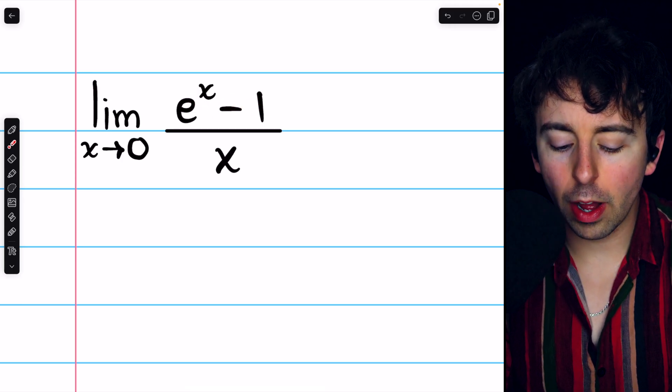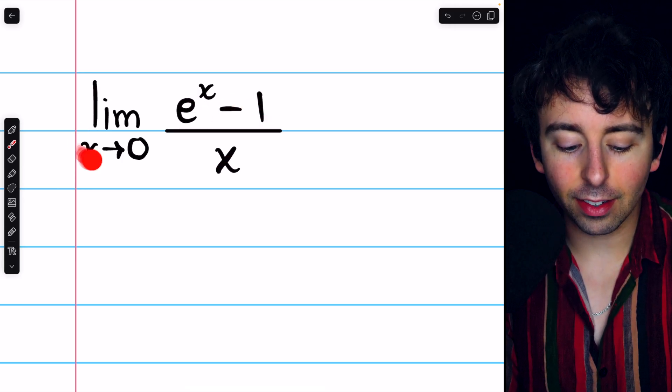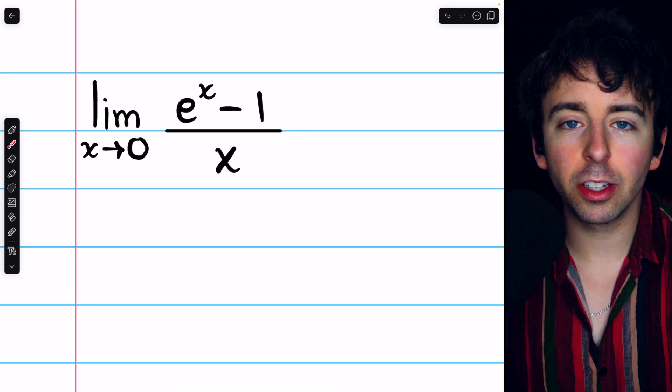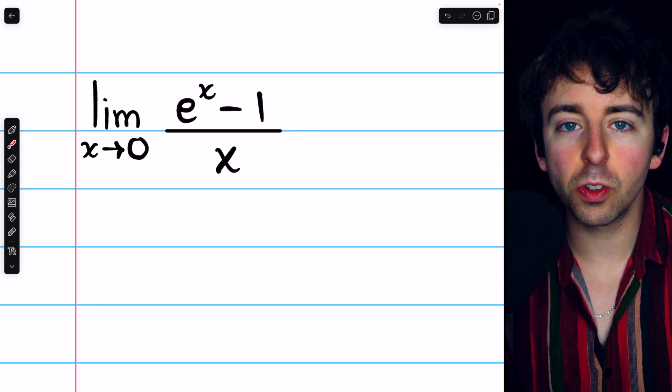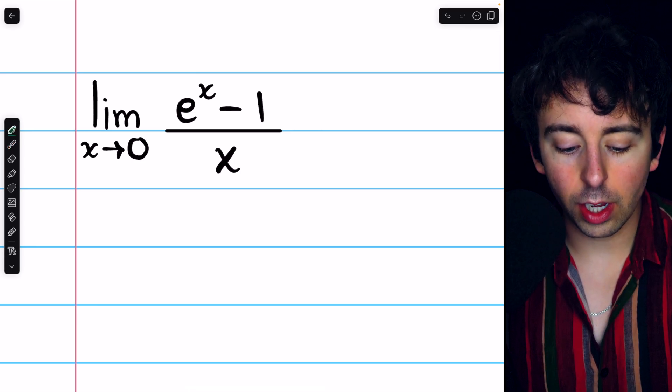The limit of e to the x minus 1 divided by x as x goes to zero cannot be evaluated directly by substitution due to a discontinuity.